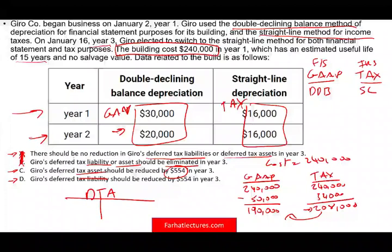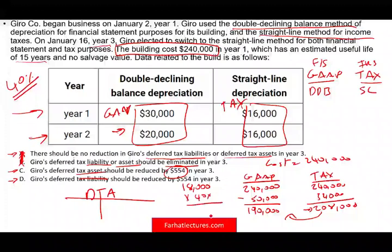We have the difference between the two book values. The difference between $190,000 and $208,000 is $18,000. So we have $18,000 worth of temporary difference. The tax rate for this problem is 40%. As a result, we have a deferred tax asset of $7,200 as of year two.